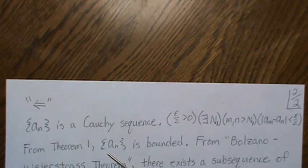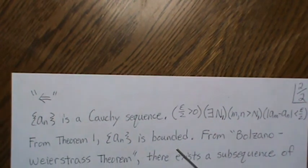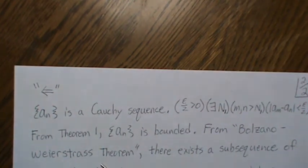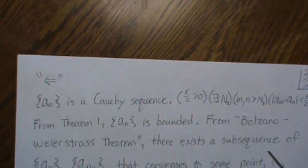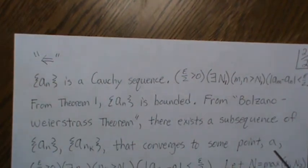Now from Theorem 1, we know A_n is bounded. A Cauchy sequence is bounded. So now from the Bolzano-Weierstrass theorem, there exists a subsequence of A_n, call it A_{n_k}, that converges to some point. We're just going to generically call it A.